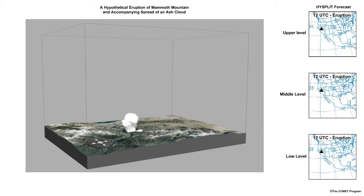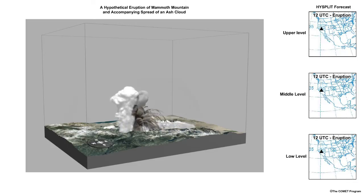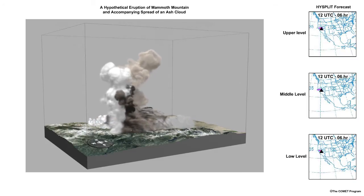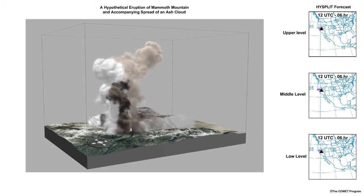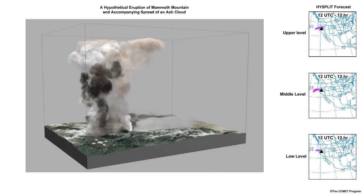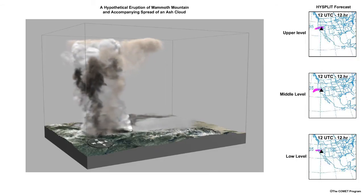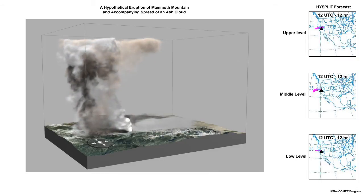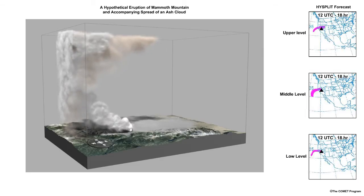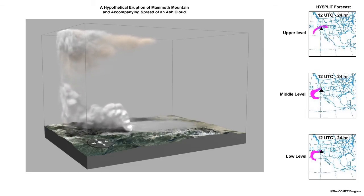The left panel in this animation simulates a major eruption on Mammoth Mountain, California, with a significant emission of volcanic ash into the atmosphere. As a result, the Long Valley Observatory issues a warning about the eruption, which prompts the Air Resources Laboratory to run the HYSPLIT model, shown on the right.